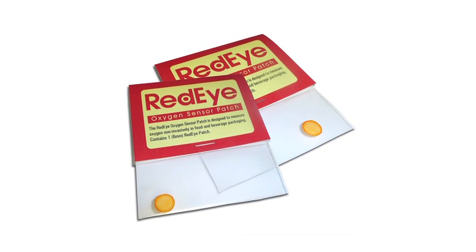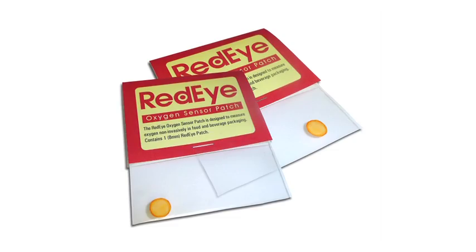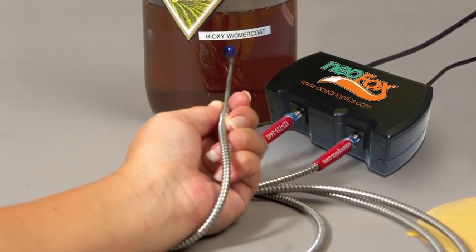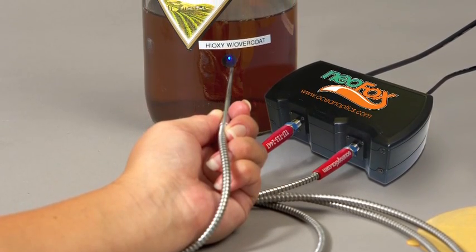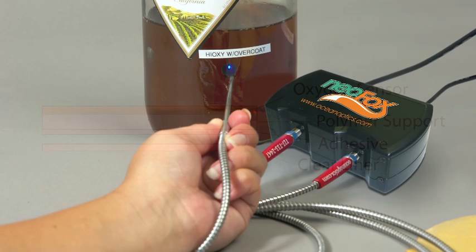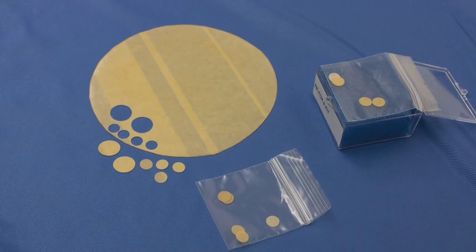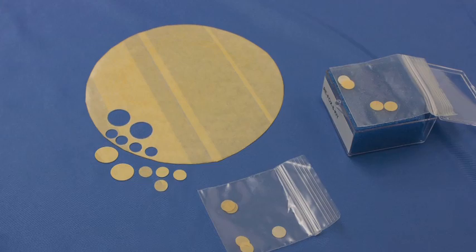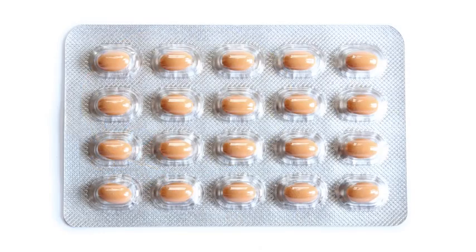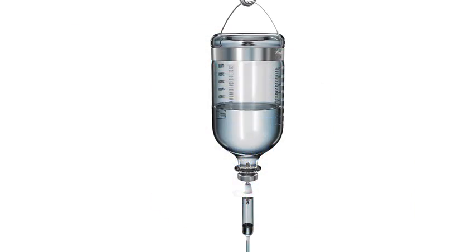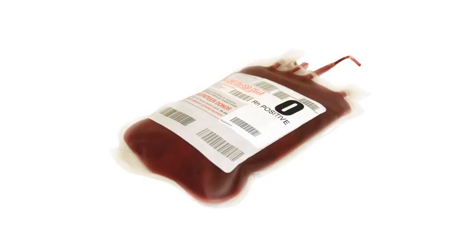The red eye patch is a revolutionary oxygen sensing product, designed specifically to measure oxygen. A simple yet effective design consists of a sensor coating formulation trapped into a sol-gel matrix. This immobilizes and protects the formulation from the package contents. Available in sizes of just a few millimeters to several centimeters, the self-adhesive red eye patch can be easily integrated into any system.